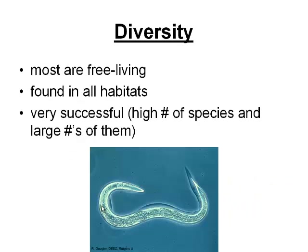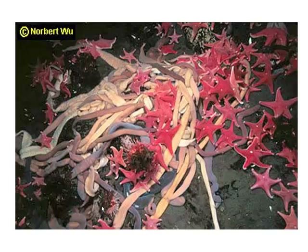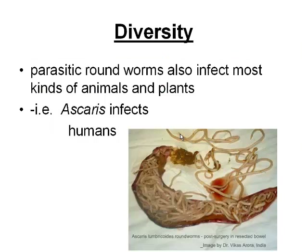Some diversity: most are free-living, found in all habitats, and they are very successful because there are lots of species and large numbers of them. Here's an example of a large number of free-living worms living off other organisms — these ones are not parasitic.